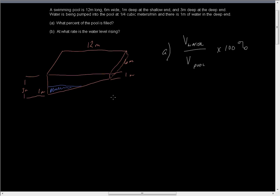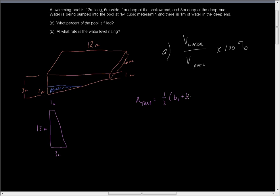There are several ways we could do this. What we have here is a trapezoid with some depth. If you look at it from the side, I've got a trapezoid that has a height of 12 meters. Looking at it on the side, I've got base one equal to one meter and base two equal to three meters. The area of a trapezoid is equal to one half the sum of the bases times the height.